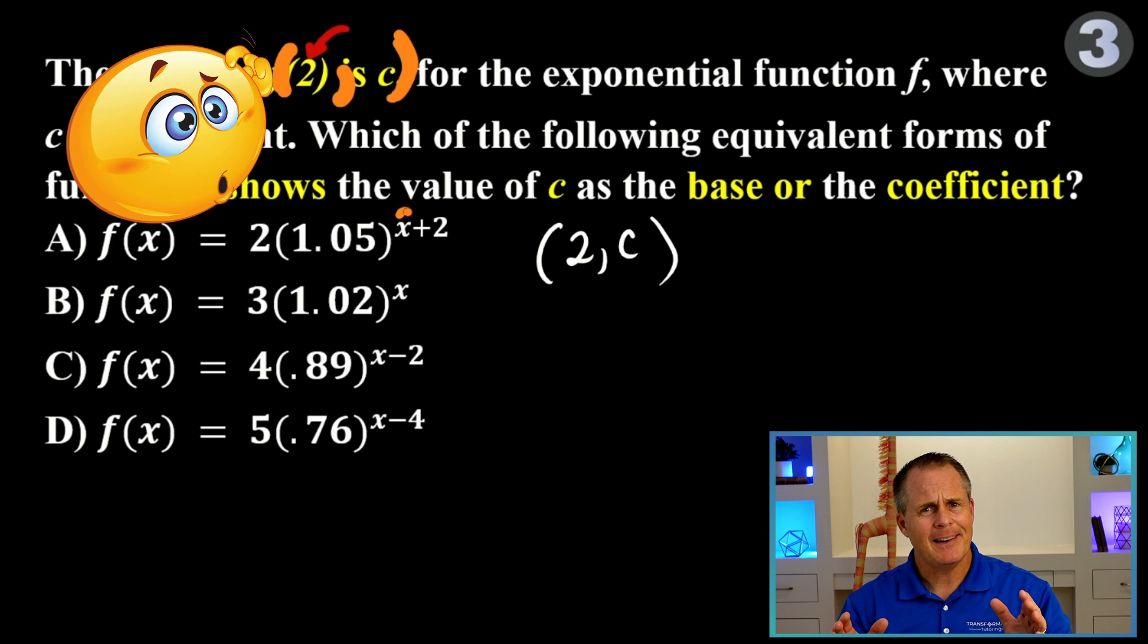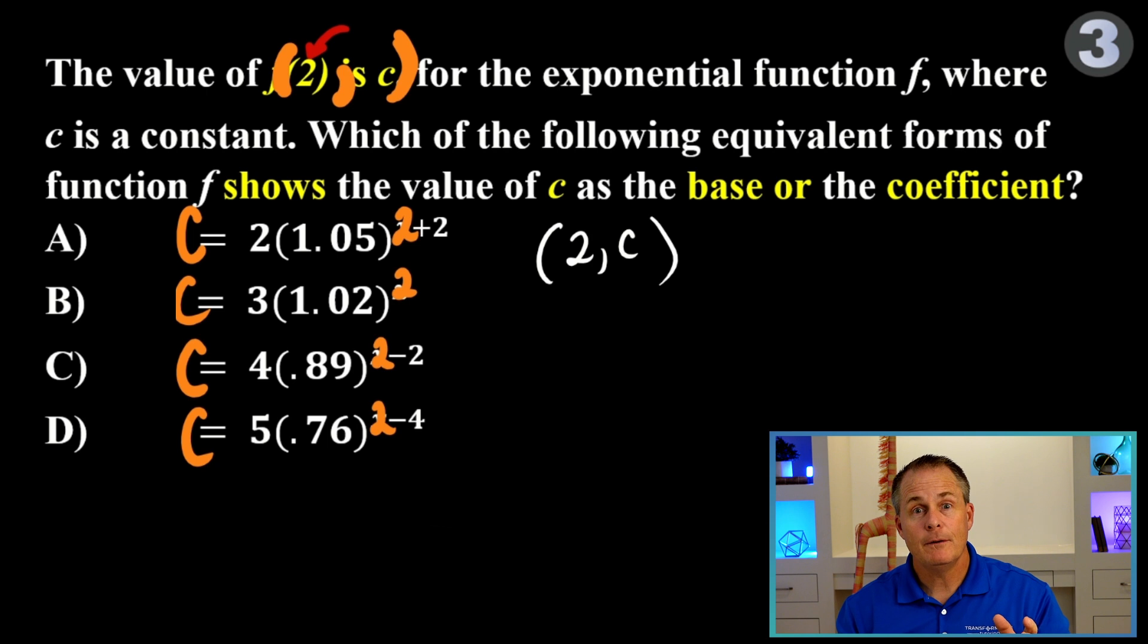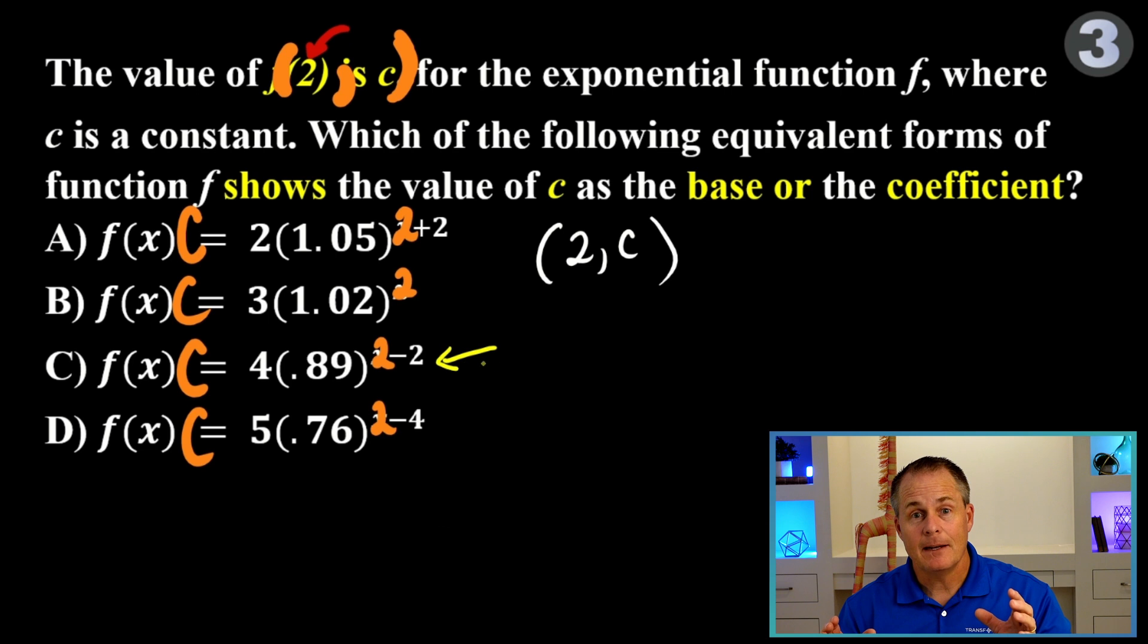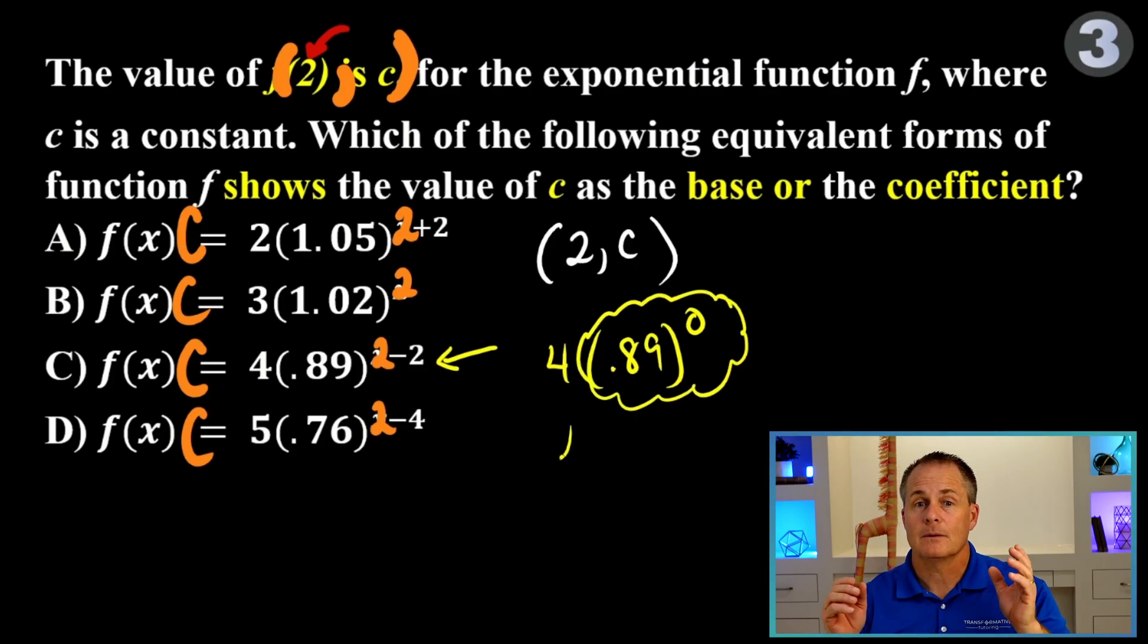So, we may not know what we're doing, but we know we're supposed to put a 2 in for x and a c in for y. Once we do that, only one of these answer choices is easy enough to do in our head. Which one is it? It's answer choice C, because what is 0.89 to the 0 power? Well, as we learned, anything to the 0 power is 1. So, this is 1, and 1 times 4 is 4.